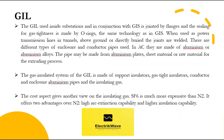The GIL used inside substations and in conjunction with GIS is jointed by flanges, and the sealing for gas tightness is made by O-rings — the same technology as in GIS. When used as power transmission lines in tunnels, above ground, or directly buried, the joints are welded. There are different types of enclosure and conductor pipes used. In AC applications they are made of aluminum or aluminum alloys. The pipe may be made from aluminum plates, sheet material, or raw material for the extrusion process.